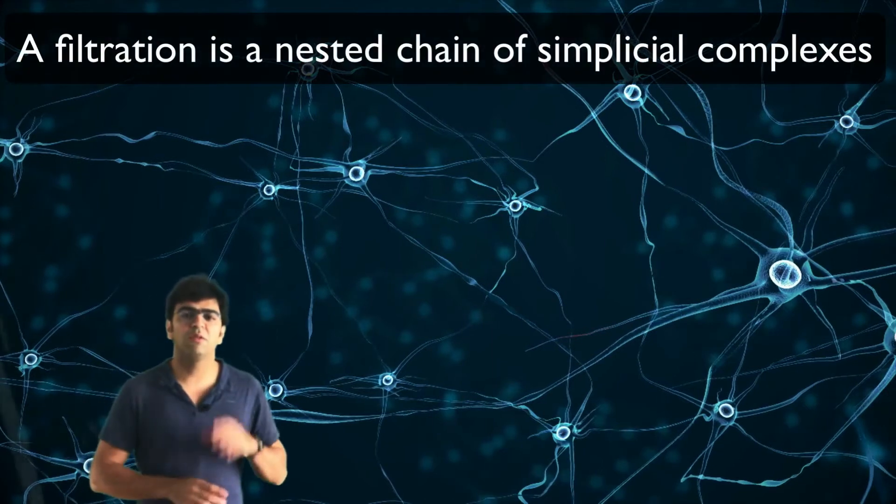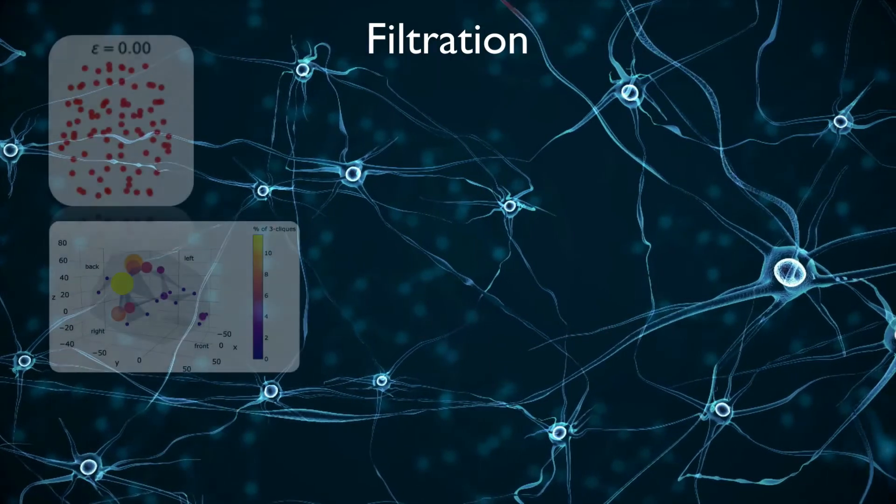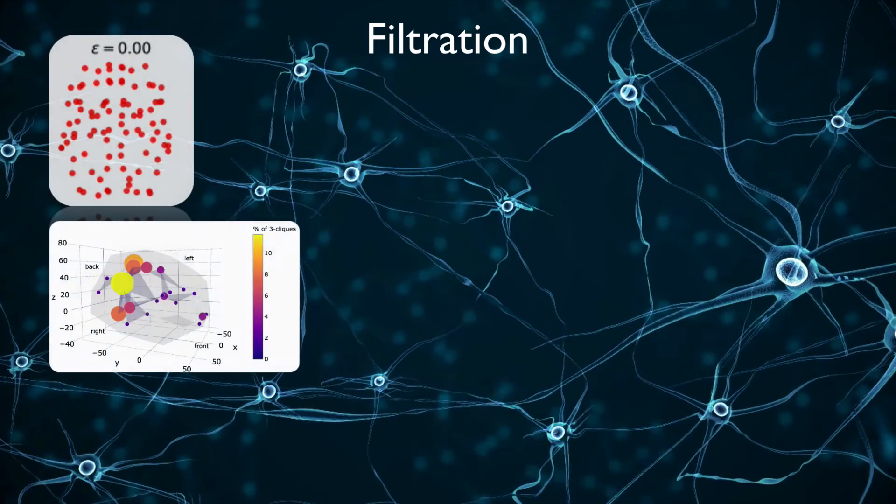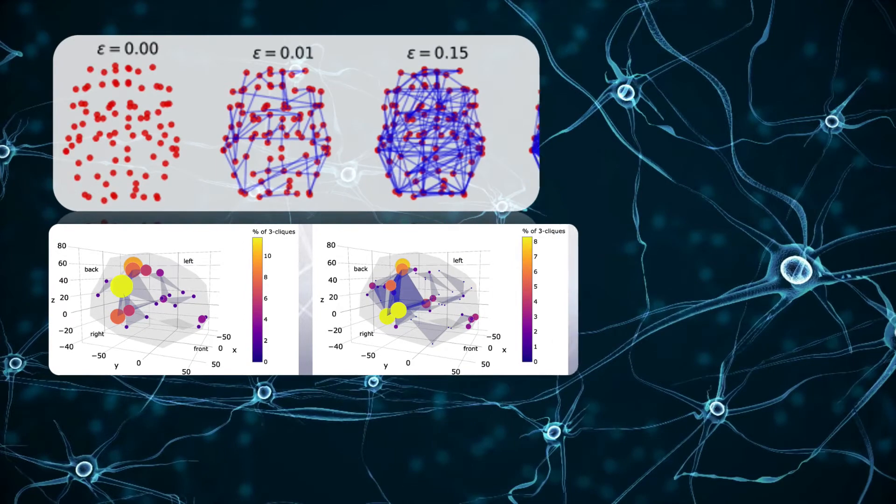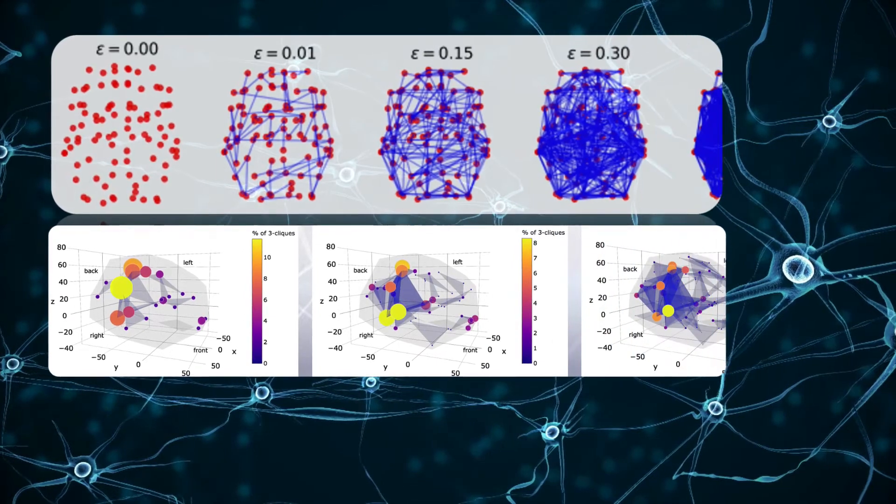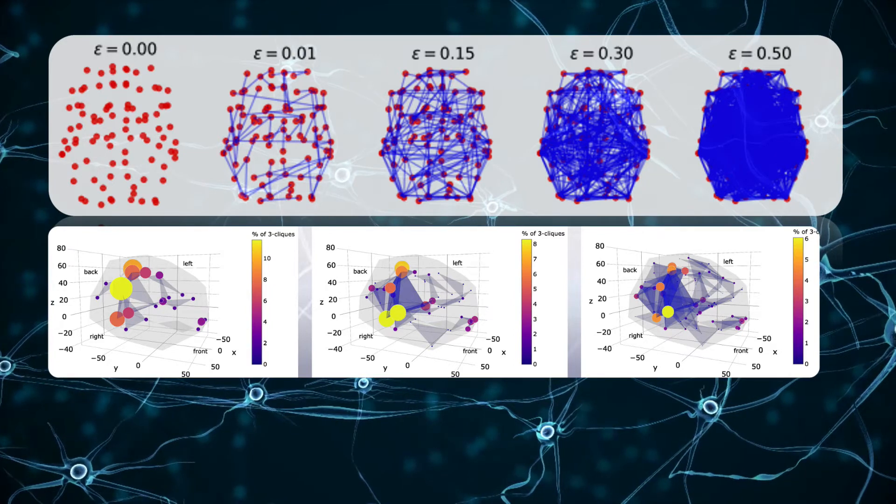One important thing that we have to use now is the idea of a filtration. In a filtration, we start with an empty brain network, and then we study how the structure of the brain network will change as we attach new edges and cliques, that now are the simplices, as a function of the correlation threshold between two areas of the brain network.